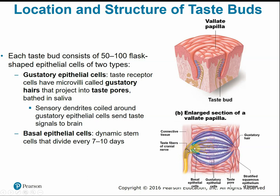Taste buds also contain basal epithelial cells — stem cells that divide every week or so to replenish and replace taste buds. The tongue undergoes a lot of abrasion during eating, and if you burn your tongue you can't taste well for a couple of days. But taste buds regenerate from those basal epithelial cells.